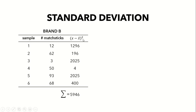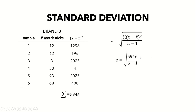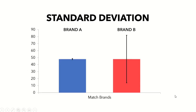Let's take the standard deviation of Brand B. The squared deviations are: 1296, 196, 2025, 4, 2025, and 400. We obtained these by subtracting the average (48) from each observation and squaring the result. Totaling all squared deviations gives a sum of squares of 5146. Dividing by n − 1 = 5 and then taking the square root gives a standard deviation of approximately 34.